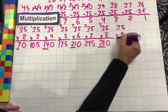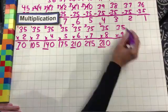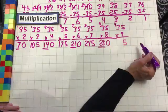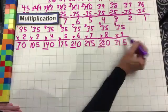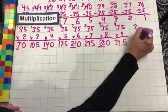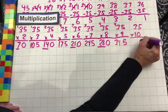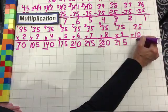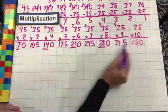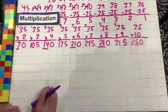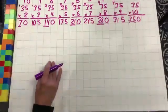35 times nine — that is nine 35s. Nine times five is 45, drop the five, carry the four, nine times three is 27 plus four is 31. And last but not least, 35 times ten: drop that zero down to hold that place, one times five is five, one times three is three — so we have 350. Those are all counting by sevens. Nice pattern to check your work with.